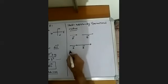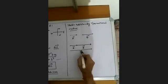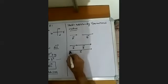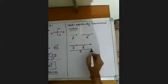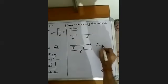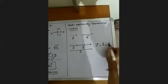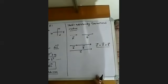So the final vector will be vector C, which is the vector from the tail of the first vector to the head of the second vector. So we write that C vector is equal to A vector plus B vector. This is how vectors are added geometrically.